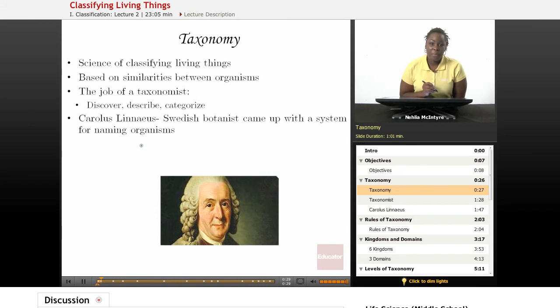Let's first talk about what taxonomy is. Taxonomy is the science of classifying living things based on similarities between organisms.